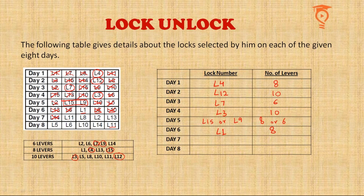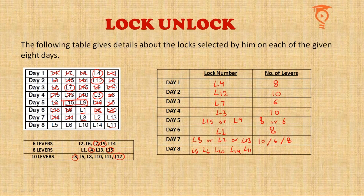On Day 7, L14 and L11 appear the next day, but L8, L2, and L13 do not — so there is ambiguity among three locks: L8 (10 levers), L2 (6 levers), and L13 (8 levers). For Day 8 there are five possibilities: L5, L6, L10, L14, and L11, with lever counts of 10, 6, 10, 6, and 10 respectively. This table will help us answer the questions.